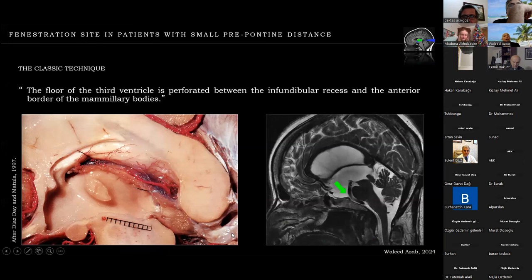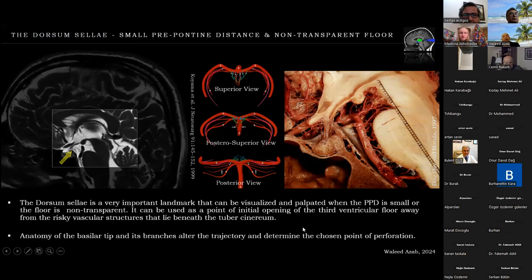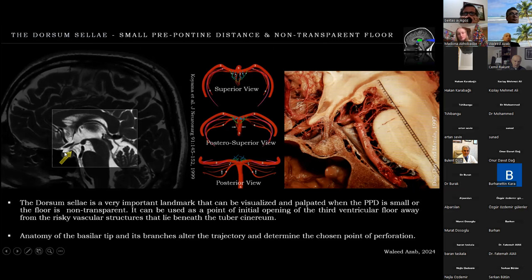The classical technique describes the floor of the third ventricle being opened between the infundibular recess and the anterior border of the mammillary bodies. However, on this sagittal MRI, the basilar artery is completely — almost touching — the posterior aspect of the clivus, so there is no space for a standard ETV. These are cases with small or zero prepontine distance (PPD). The solution is the dorsum sellae, a very important landmark that can be visualized and palpated when the prepontine distance is small or the floor is non-transparent.